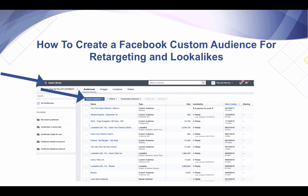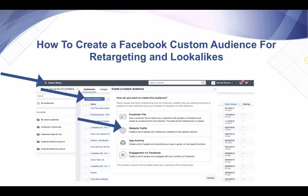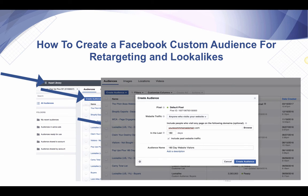Next thing you do is click create audience. This is going to pop up. You're going to click website traffic. And then when this pops up, you can do many different types of audiences, but this is a very simple retargeting audience. This video assumes that you have installed the Facebook pixel on your website.